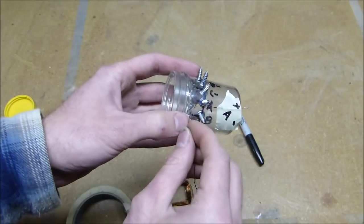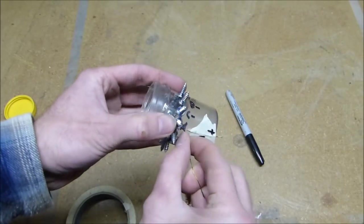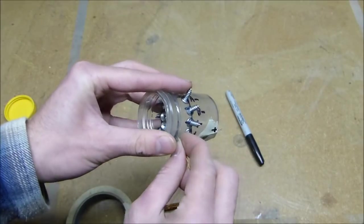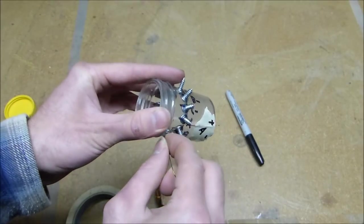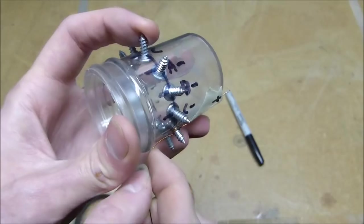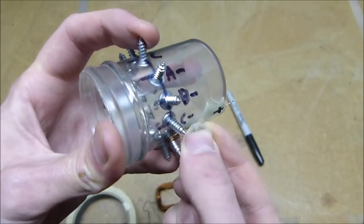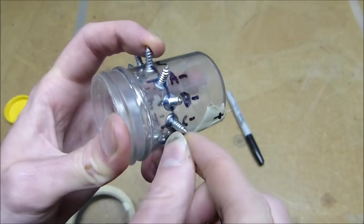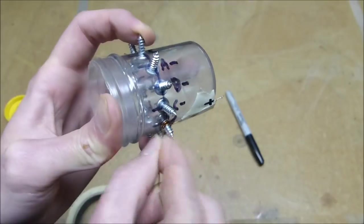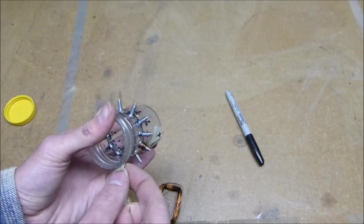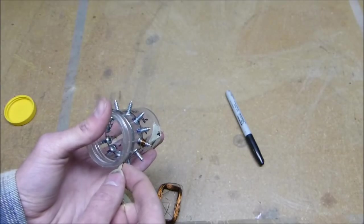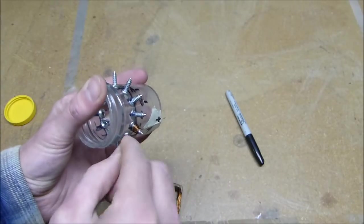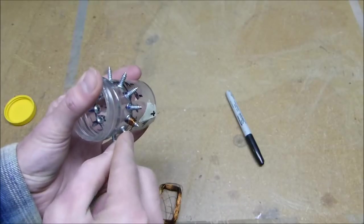So starting at A, wrap clockwise and you have to count your turns. So there's one turn, two turns, three turns, four turns, five, six, seven. You have to remember to always do the same number of turns on each one and remember which way you're turning. Twenty-three, twenty-four, twenty-five.